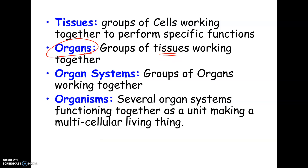The heart can't survive on its own either — it's part of the circulatory system, which is a bunch of organs working together. You've got your heart, your blood vessels, and all the tissues that are part of that. When we put a bunch of these systems together — your circulatory system, respiratory system, endocrine system, etc. — you get a whole multicellular organism.